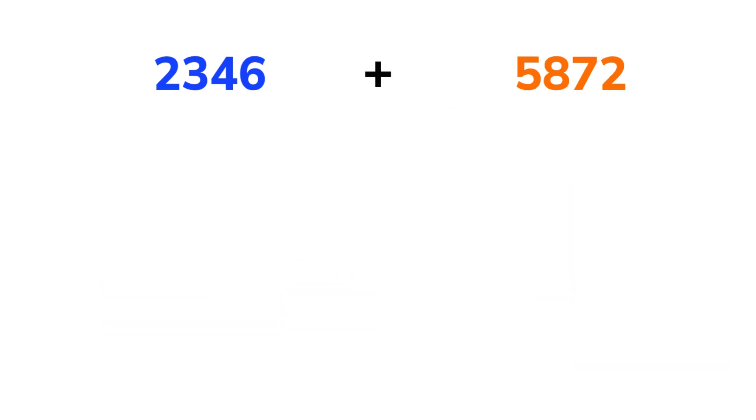We'll break it down just like before. First, split each number into place values: thousands, hundreds, tens, and ones. 2,346 becomes 2,000 plus 300 plus 40 plus 6. 5,872 becomes 5,000 plus 800 plus 70 plus 2.